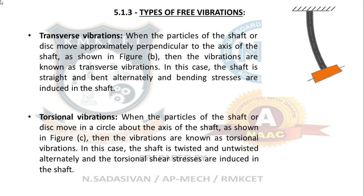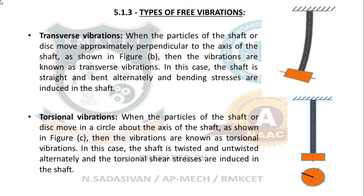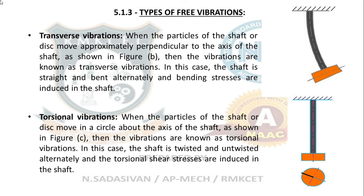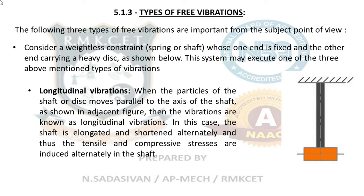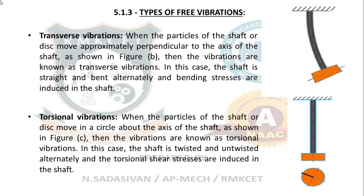Next is torsional vibration — you are twisting the shaft. It is not visible in the front view, so a bottom view is given. The shaft is twisted alternately, and such a type of vibration is called torsional vibration. There are three types of free natural vibration: you give a load, leave it, and it keeps acting for a period of time. The three subdivisions are: longitudinal, transverse, and torsional. All three types of problems will be solved. We even have a torsional vibration experiment in the dynamics lab.